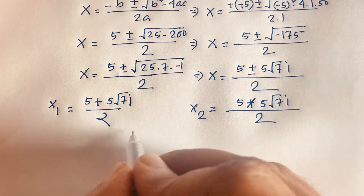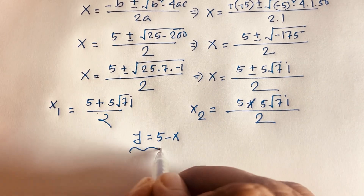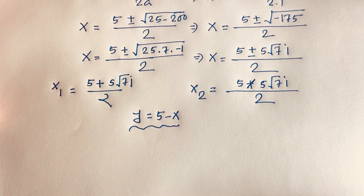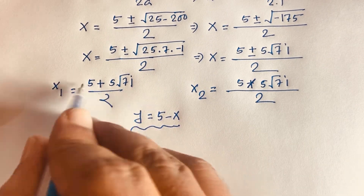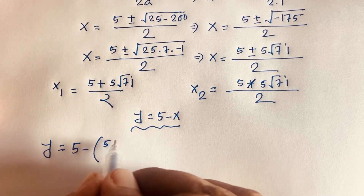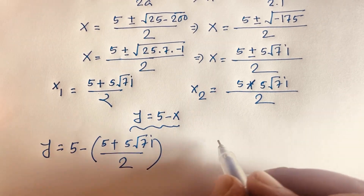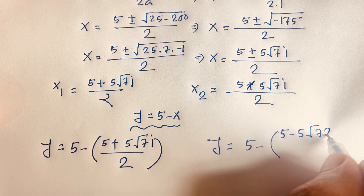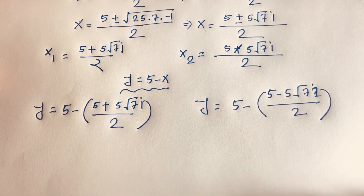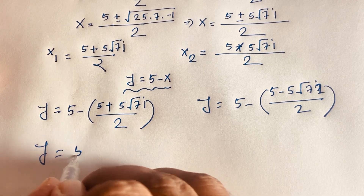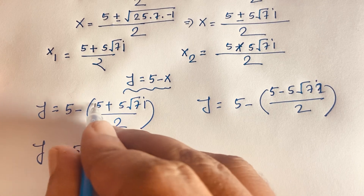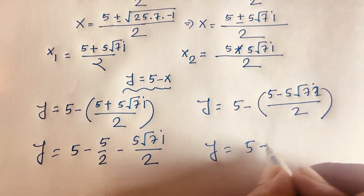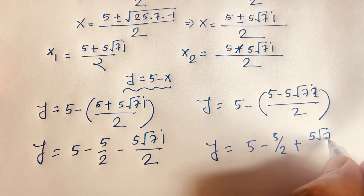Recall our third equation: y is equal to 5 minus x. Our target now is: what is the value of y in this math question? When x1 is equal to (5 plus 5√7i)/2, then y is equal to 5 minus x, where x is equal to (5 plus 5√7i)/2. So y equals 5 minus 5 over 2 minus 5 square root 7i over 2. And for x2, y is equal to 5 minus 5 over 2 plus 5 square root 7i over 2.